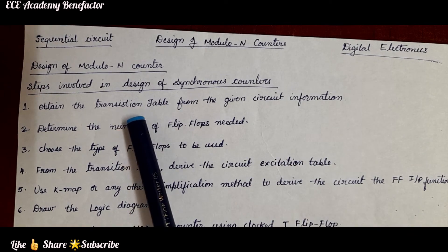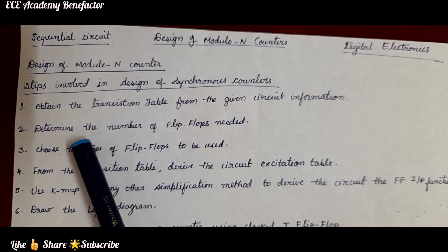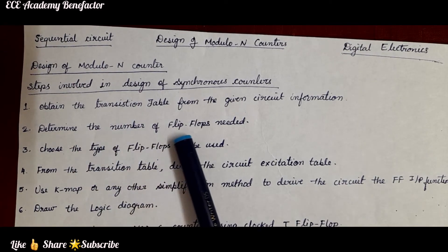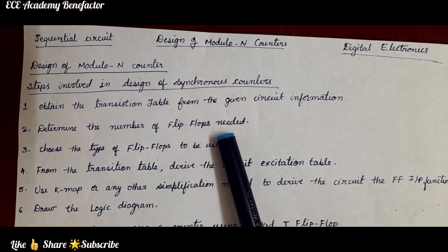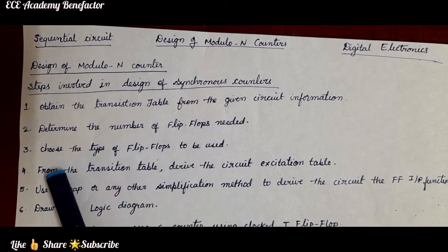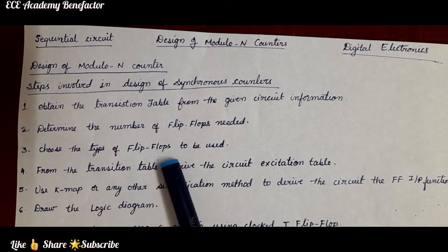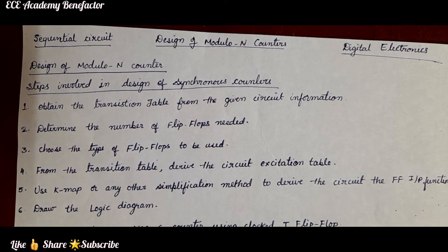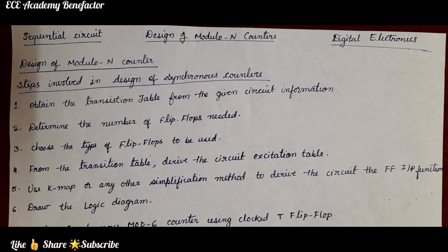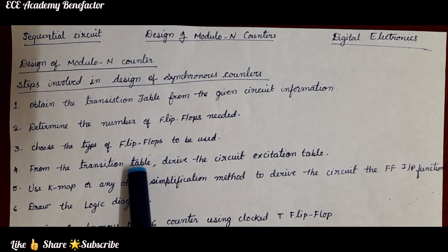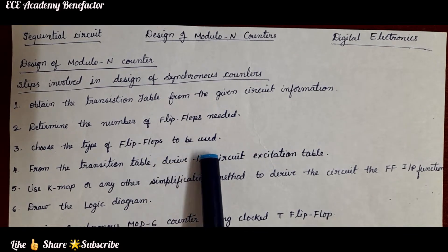After obtaining the transition table, the second step is to determine the number of flip flops needed. The third step is to choose the type of flip flops to be used — whether SR flip flop, JK, D flip flop, or T flip flop.